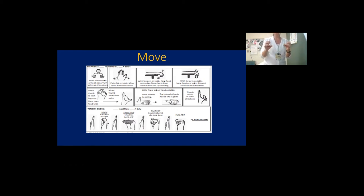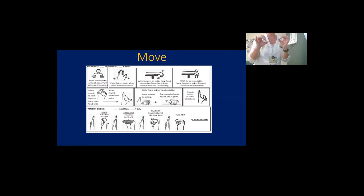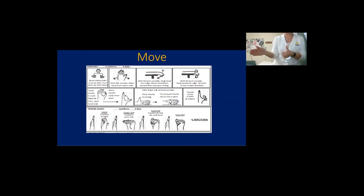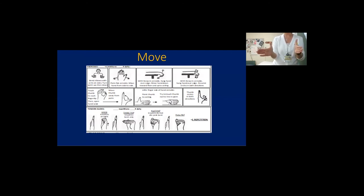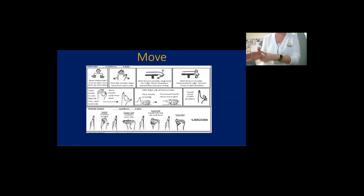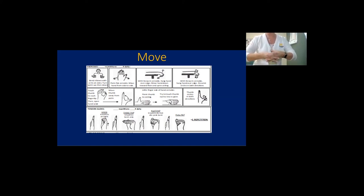Now thumb to each fingertip, making a nice 'O.' Next, thumb up like a hitchhike, then spread it to the base of your pinky — you might feel a good stretch through there. Another favorite is thumb twiddling: put them together rather than out to the side since there's not a lot of control at the CMC joint. Keep your wrist straight and do thumb twiddles in each direction.